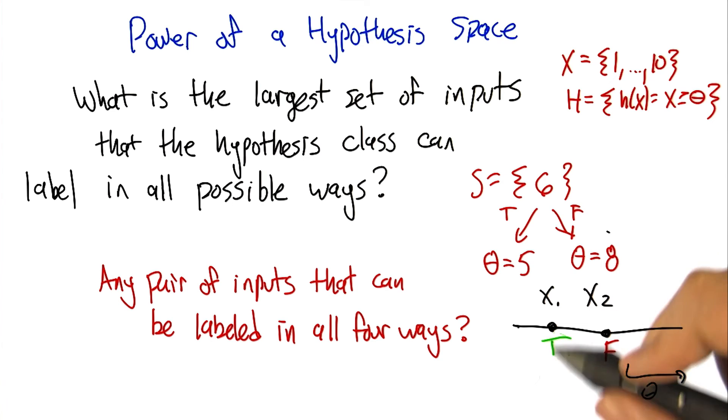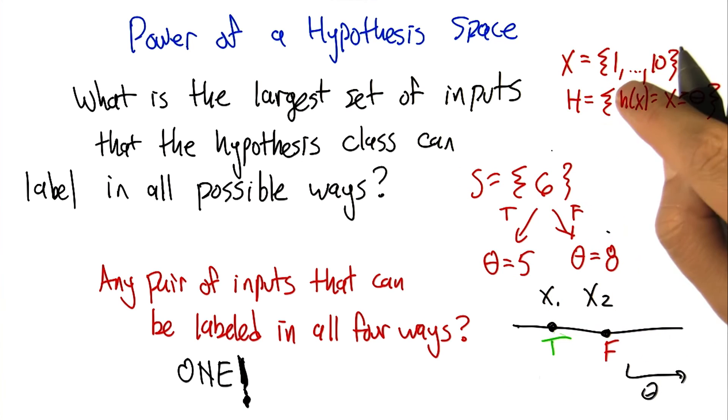True, false. There's just no way to make that happen. So would you say this was a weak hypothesis space? It definitely seems to be pretty weak, even though it's infinite.